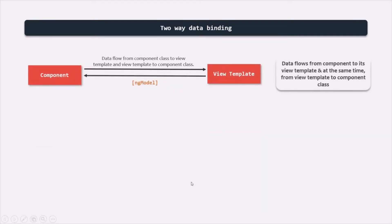We also have two-way data binding. In two-way data binding, the data flows in both directions at the same time. If we change something in the component class, that will reflect in the view. And if we change something in the view, that will reflect in the component class. To achieve this, we use ngModel. We will talk about two-way data binding and ngModel in great detail in our coming lectures. So this was a very high-level overview of what data binding is, what are the different types of data binding in Angular, and how we can achieve them. In the next lecture, let's talk about string interpolation to achieve one-way data binding from component to view template.